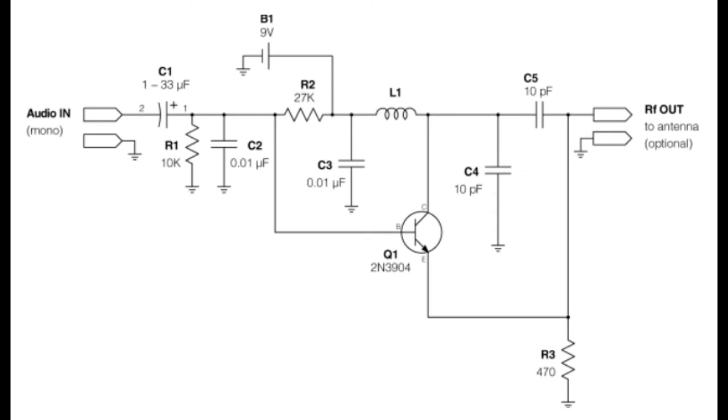The transistor mixes the audio sine wave with the LC tank sine wave. The audio signal at the base of the transistor nudges the LC tank. It pushes new energy into the oscillation every time the audio sine wave is at the top.